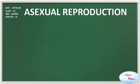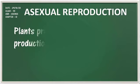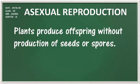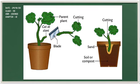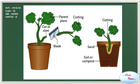Asexual reproduction: these are plants which produce offsprings without production of seeds or spores. For example, if I cut the plant with leaves and a small portion of stem, then place that part of the plant in the soil, after some time that portion starts growing and forms into a new plant. A new plant has been reproduced from a small portion of the parent plant — this is asexual reproduction, because we obtained a plant without the production of seeds or spores.